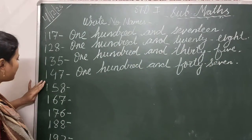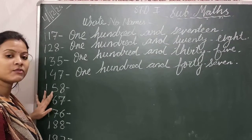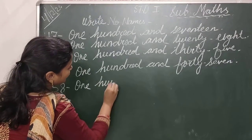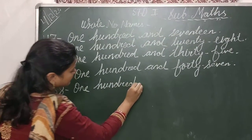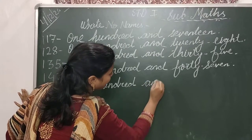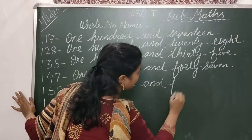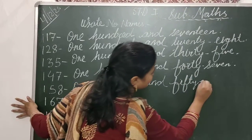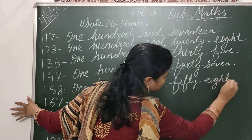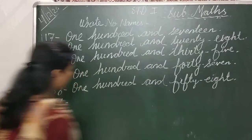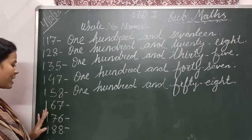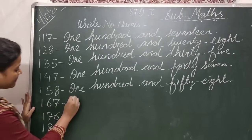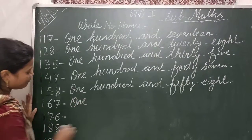Then your next number is 158. O-N-E, one hundred, H-U-N-D-R-E-D, and fifty-eight. F-I-F-T-Y, fifty. E-I-G-H-T, eight. One hundred and fifty-eight. Next, 167.